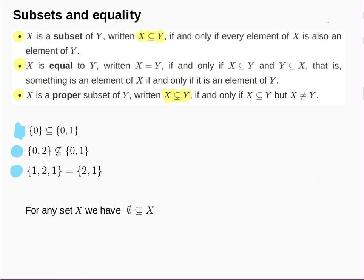Finally, these two sets are equal. Calling the left X and the right Y: X is a subset of Y because every element of X — 1 and 2 — is also an element of Y. And Y is a subset of X because the elements of Y, 2 and 1, are also elements of X. So X ⊆ Y and Y ⊆ X, which means Y equals X. This is why set equality ignores repetition and order.